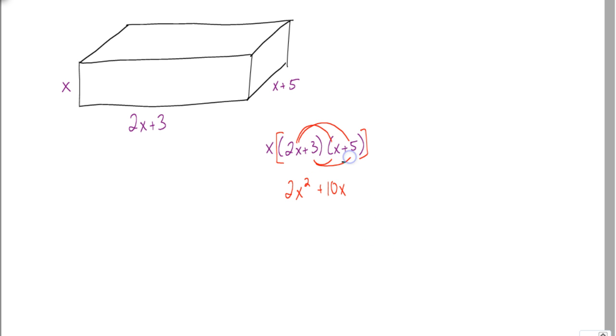So, I'm done multiplying the 2x times those items. Now, we're going to distribute the 3 times those items. So, 3 times x is 3x and 3 times 5 is 15.